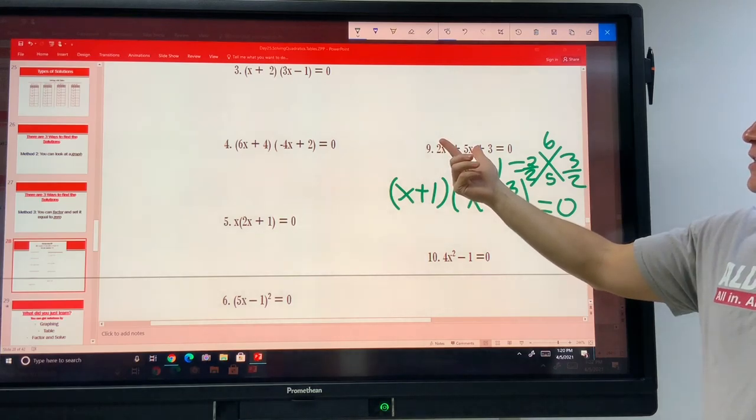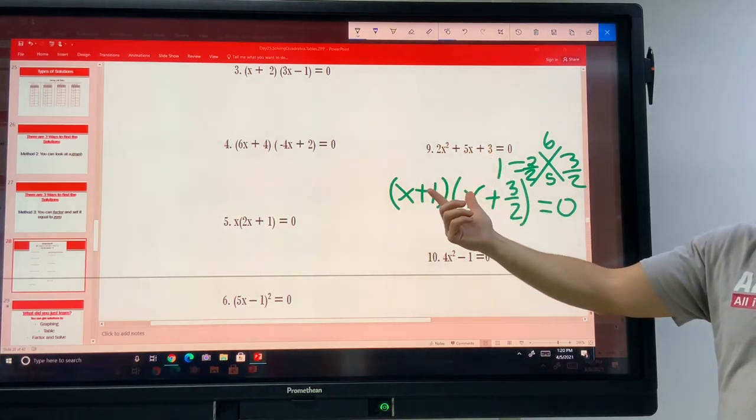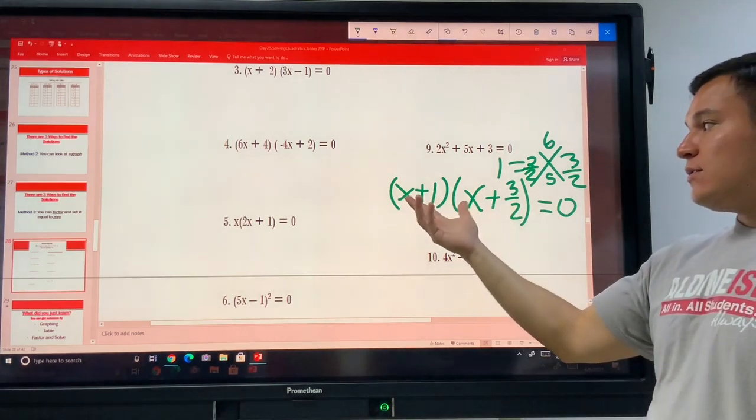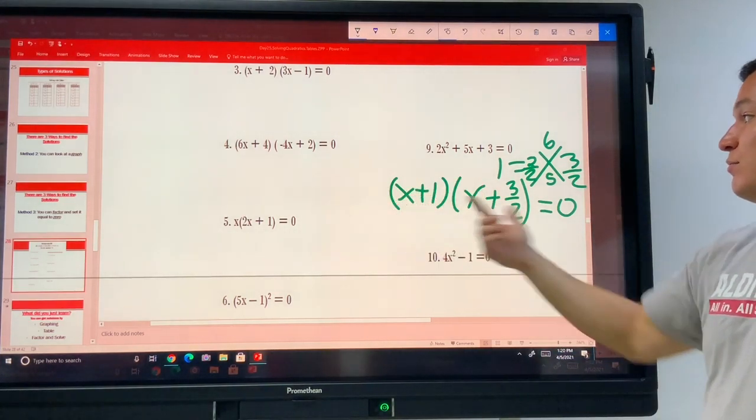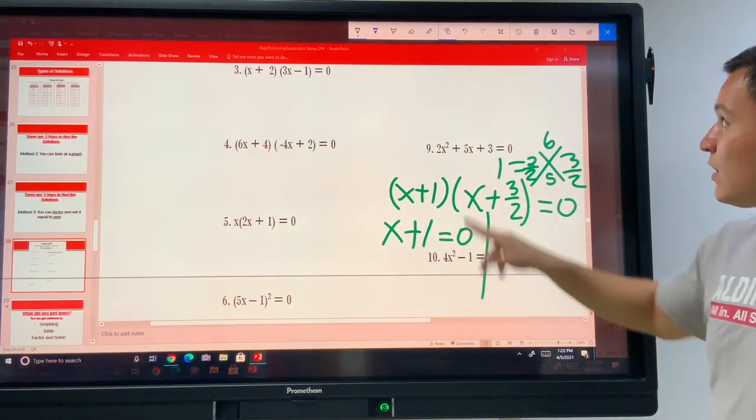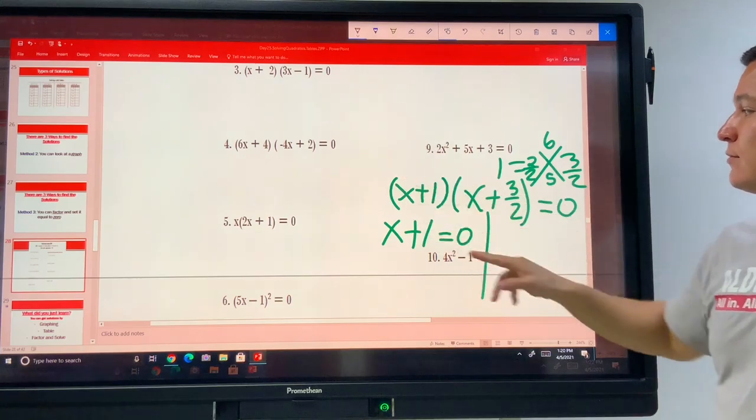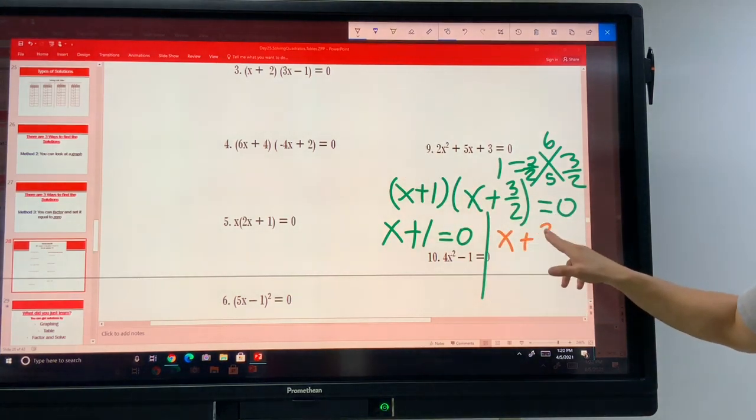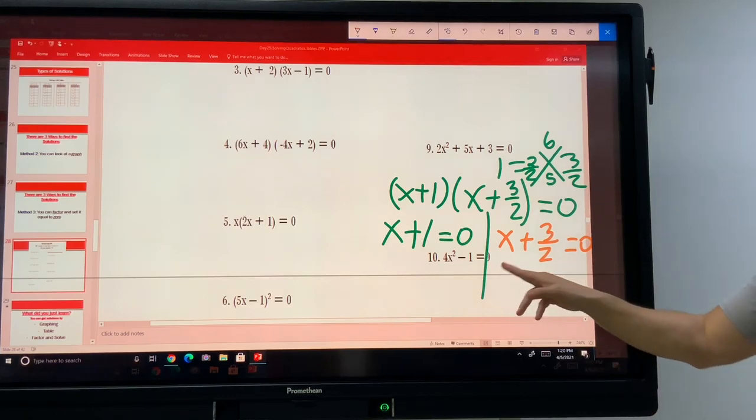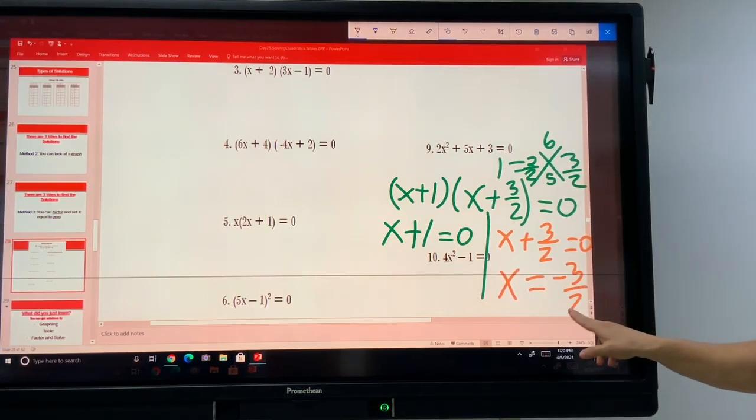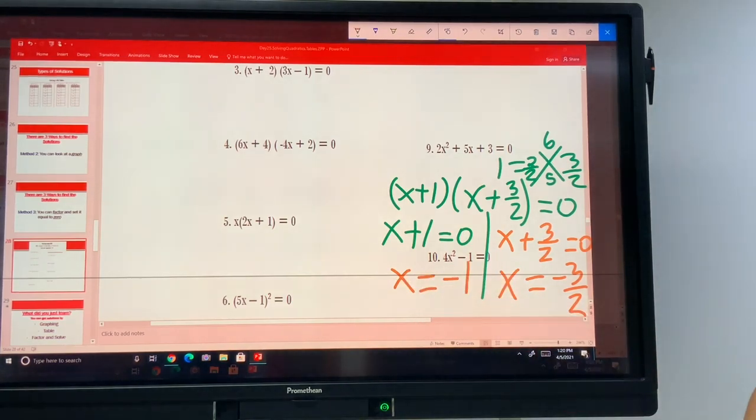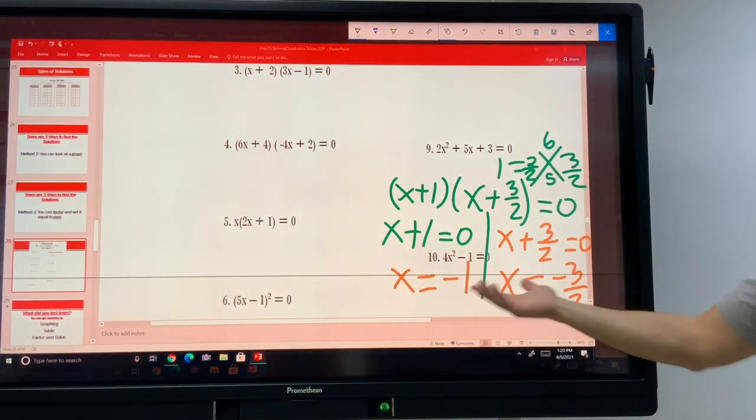Equals 0. When you factor it, it only changes the left side, and the right side is still equal to 0. Then you take the first factor, put it equal to 0. Then you take the second factor, set it equal to 0, solve for x. And you're done. Once you get your answers, you're done.